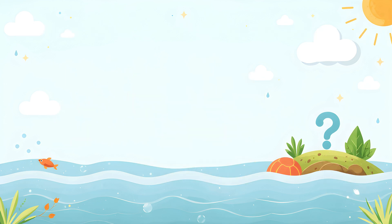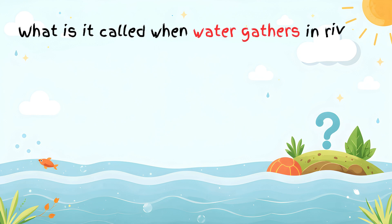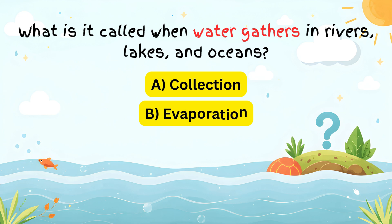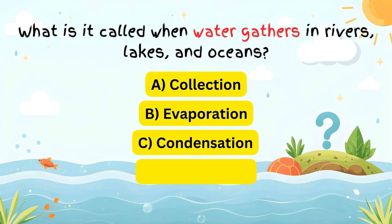When water gathers in rivers, lakes, and oceans, this stage is called collection, completing the cycle. What is it called when water gathers in rivers, lakes, and oceans? A) Collection. B) Evaporation. C) Separation. D) Condensation. E) Precipitation.